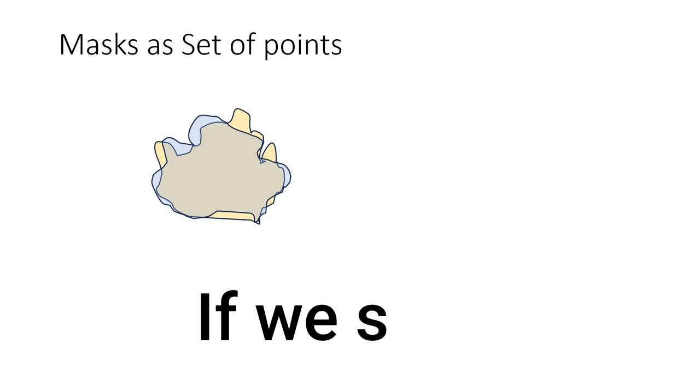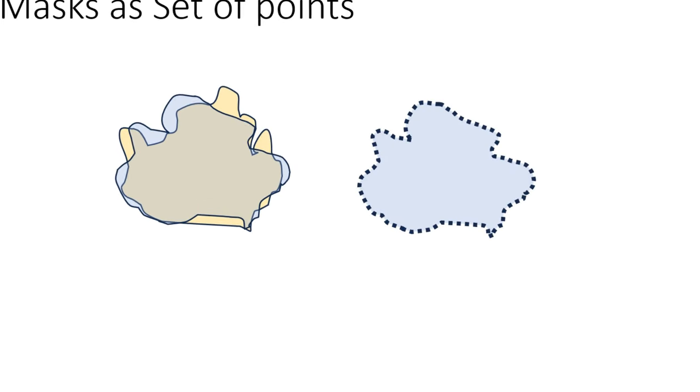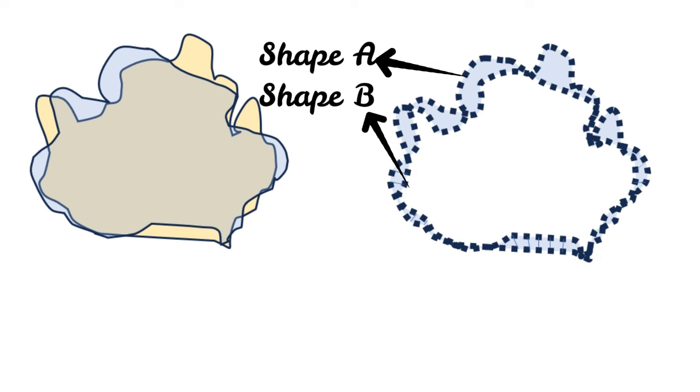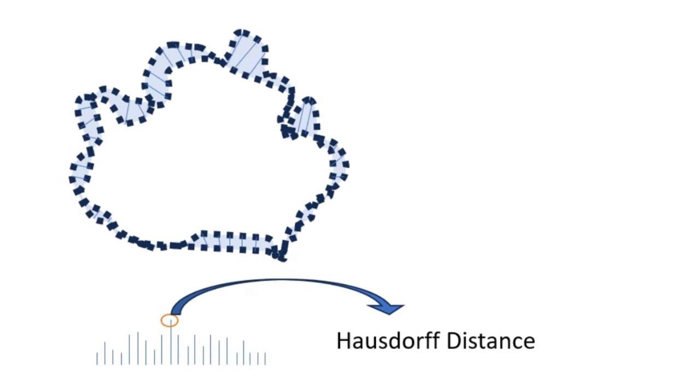If we state that HD between two figures is 3 mm, it means that we can pick any point in shape A and find the distance to its nearest point in shape B and it will not be more than 3 mm. This can be understood by the following algorithm used to calculate HD.